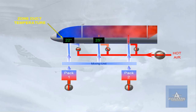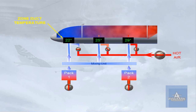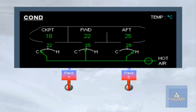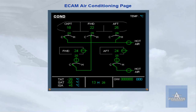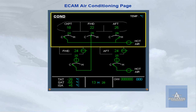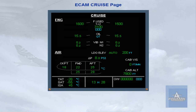The trim air valves and the hot air valve are controlled by the zone controller. The zone duct temperature, which is the temperature of the air entering a zone, and the actual zone temperature are monitored by the zone controller and shown on the ECAM. The ECAM COND page contains zone temperature and trim air system indications. The ECAM CRUISE page also contains zone temperature indications.